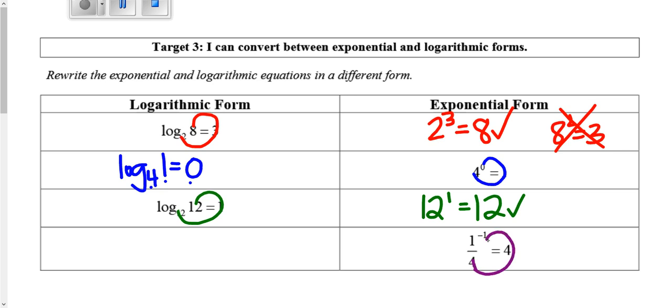The last one: create your spiral, and this would be log base 1/4 of 4 equals -1. On this target, you just have that pattern—the spiral that can take you from logarithm to exponential or from exponential to logarithm. Just use that spiral. That's your notes for Targets 1 through 3. Thank you.